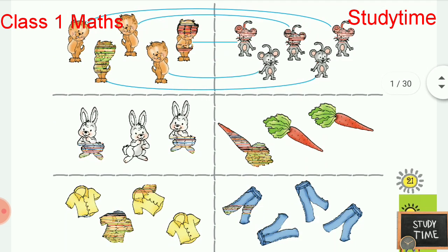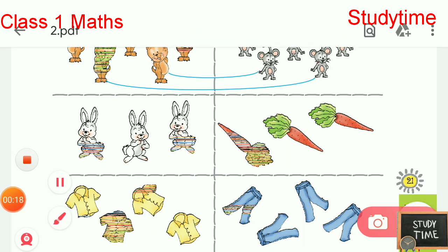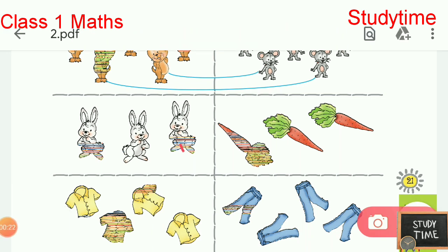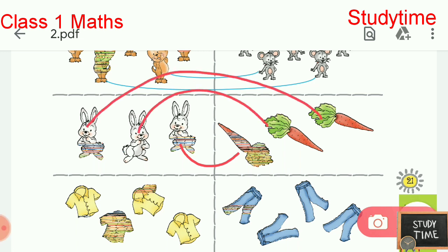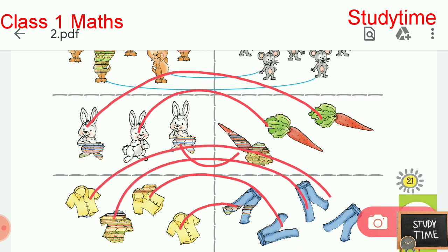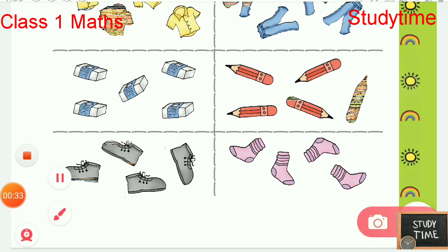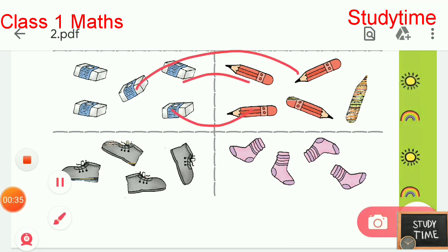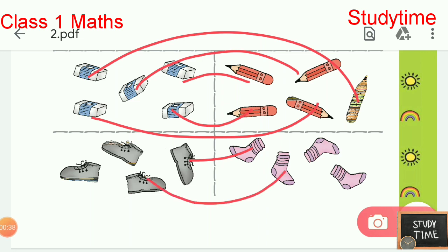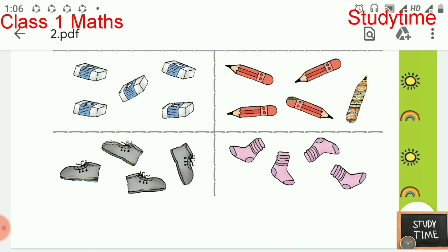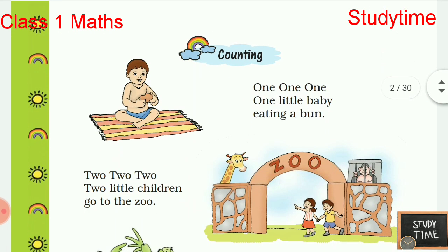Here a picture has been given where they have matched the left column with the right column. Similarly we can match this rabbit with cat. You have to match the next shirt with pant. This is simple matching where you have to match the left column with the right column. Next: counting.